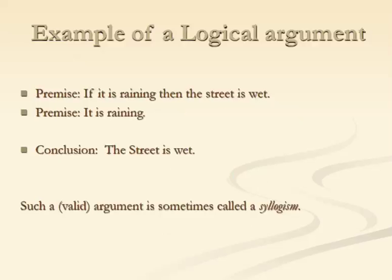This is actually a valid argument. One criterion we can apply is to think about all possible stories. Is it correct that if somebody tells you a story in which it's raining then the street is wet? That's one kind of premise in the story — something given in that story. Also given in the story is that it is raining.